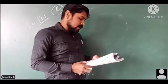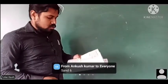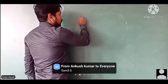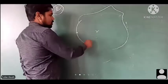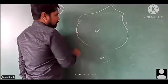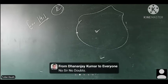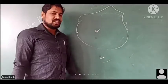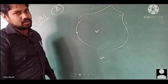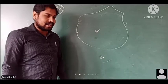Question number 12 asks: in how many parts does a closed curve divide the plane? A closed curve divides the plane into 3 parts: interior, exterior, and on the curve itself. But in your book, it mentions 2 parts — interior and exterior. So you can write 2 parts as given in the book.